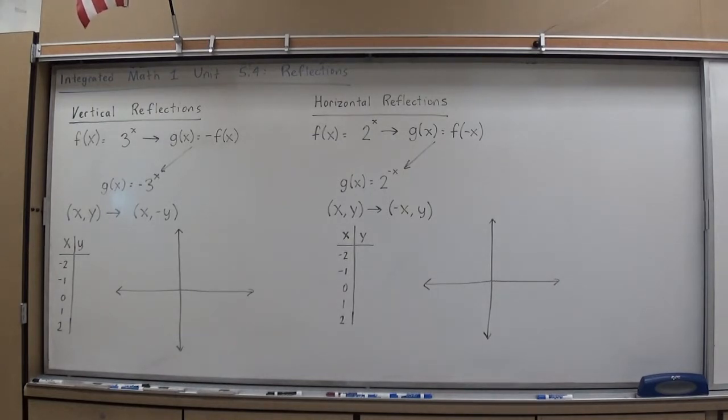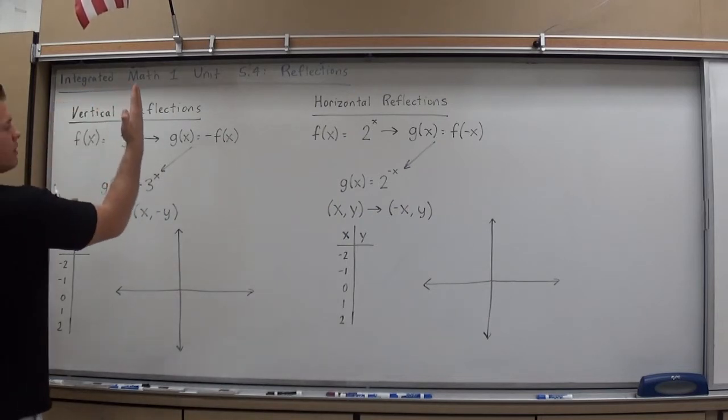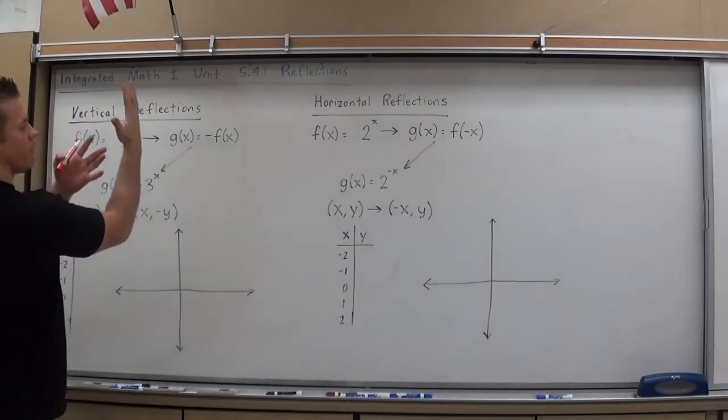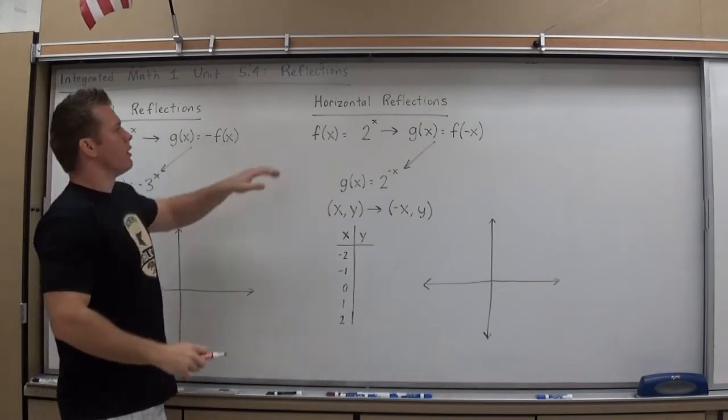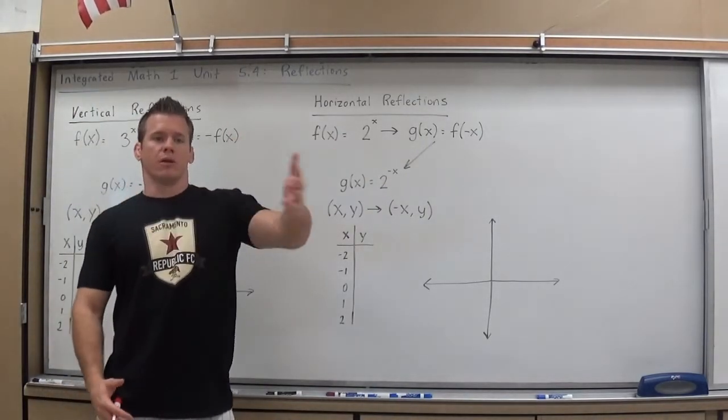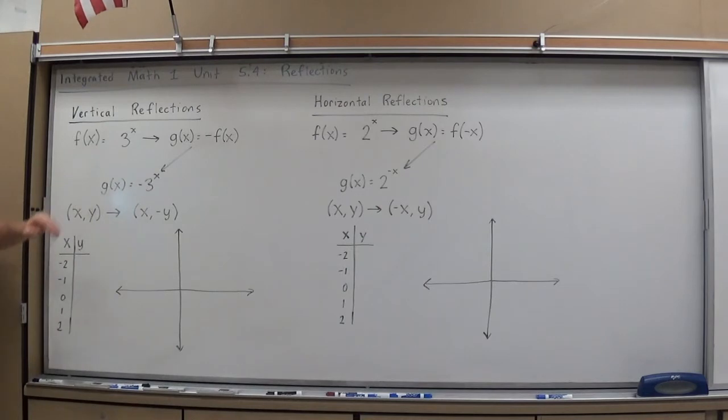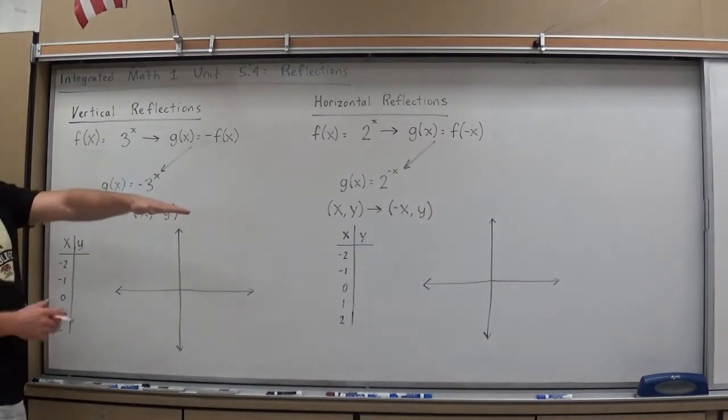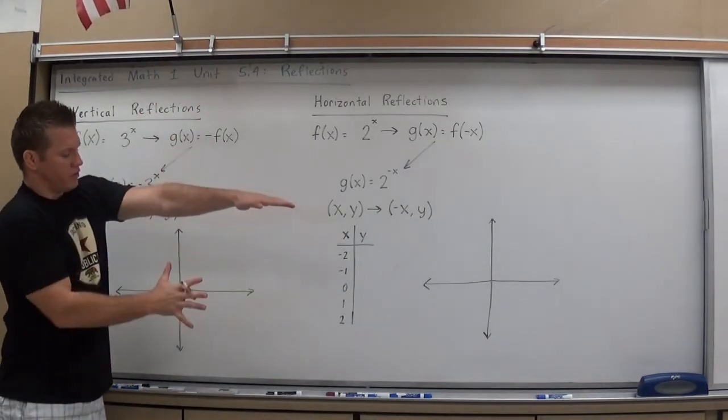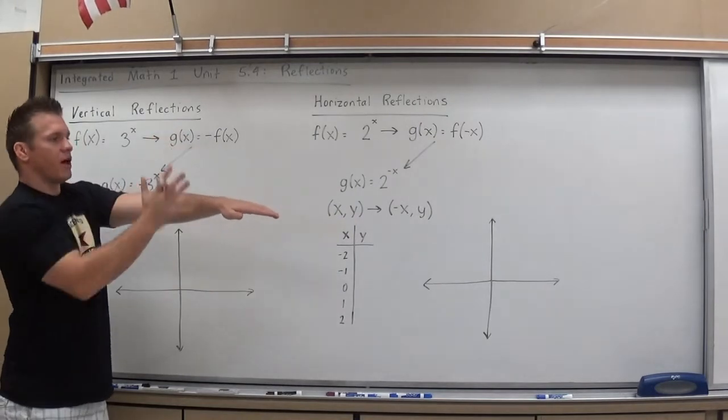Today we're going to focus on the reflection side of transformations. There's two types of reflections we can do in math. We can reflect it over the y-axis, which is reflecting an image from left to right or right to left. We call that a horizontal reflection. Or we can do a vertical reflection, which would be reflecting it over the x-axis, taking an image, reflecting it from top to bottom, bottom to top.